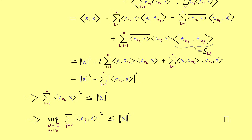I already mentioned this result is related to calculating the length of a vector with respect to a given ONS. The best thing would be to have equality in Bessel's inequality, but this is not possible in general for an ONS. However, an ONB — the best ONS — can actually achieve equality. This is something we will discuss in the next videos. I really hope to see you there — have a nice day, bye!